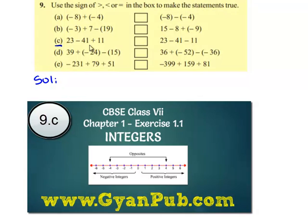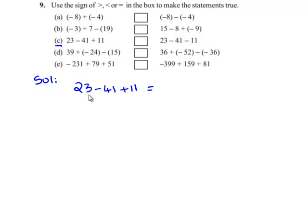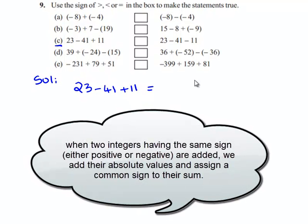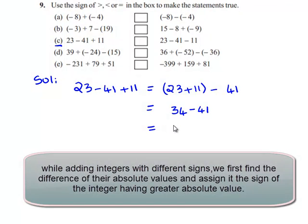We will see the third part of the problem. We will note down the values given on the left hand side, that is 23 minus 41 plus 11. First we will add up the positive values, that is 23 plus 11, and then add up the negative values, that is minus 41. 23 plus 11 is 34, and this is minus 41. So 34 minus 41 gives minus 7.